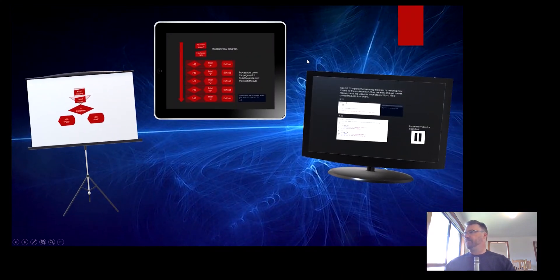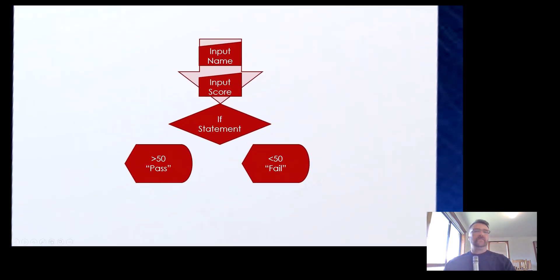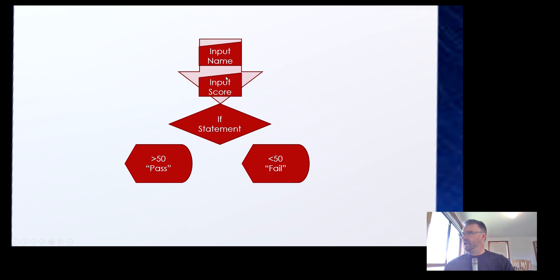Let's have a look at this decision-making process. We've got a flowchart here in PowerPoint. If I was going to input a name, input a score, and then get pass or fail according to that score — this is what the flowchart would look like. We'd input a name, then input a score. Notice that symbol — that's manual input, the square box on an angle.